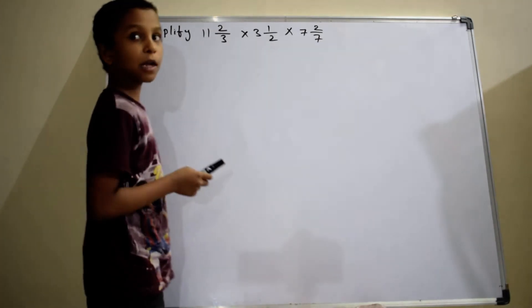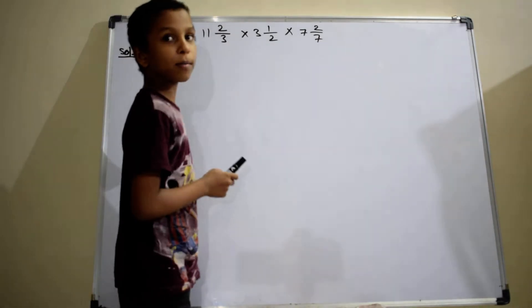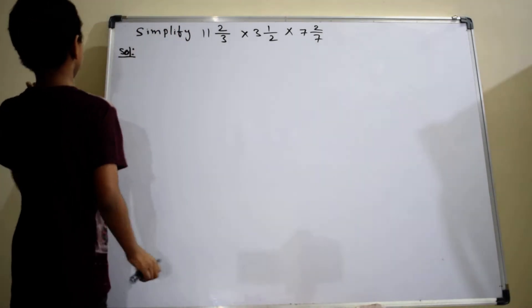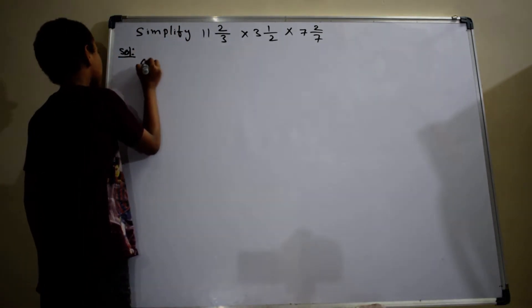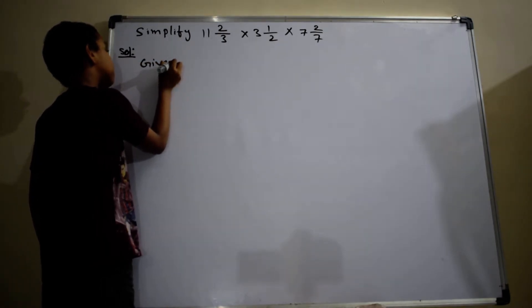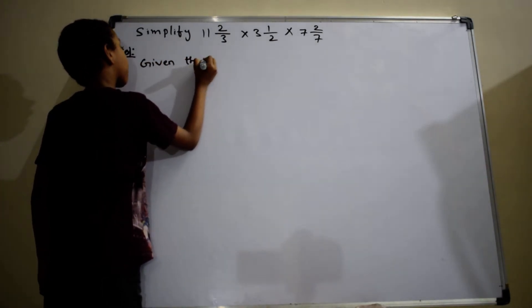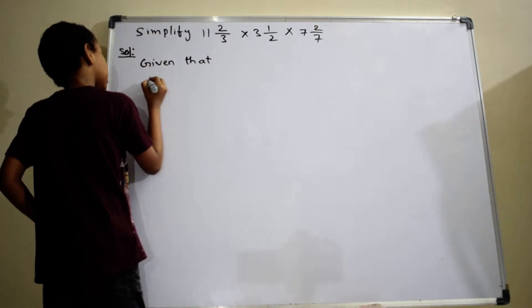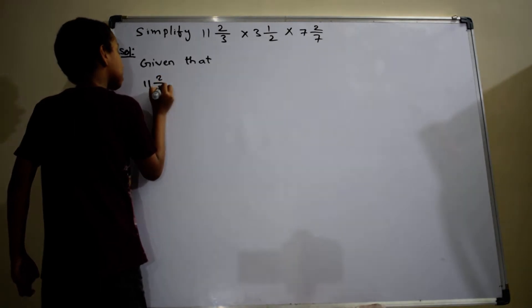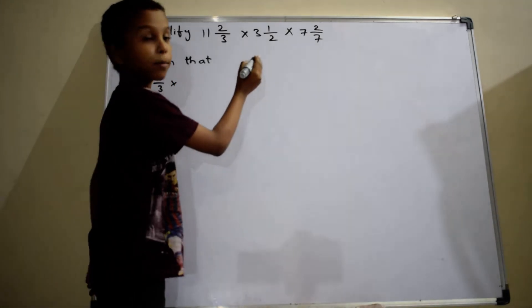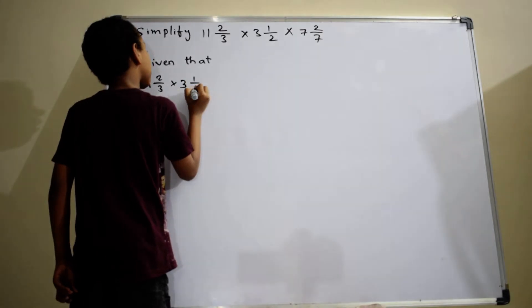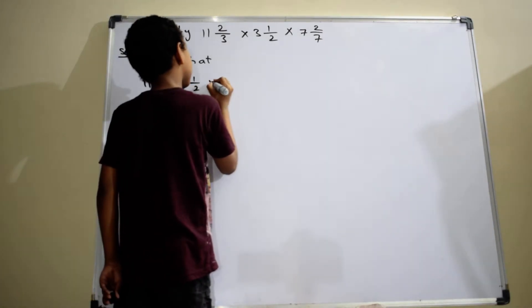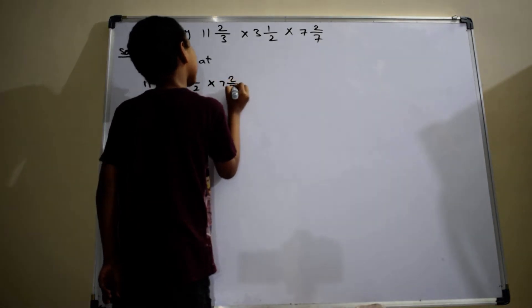The problem is, simplify 11 2/3 × 3 1/2 × 7 2/7. Given that 11 2/3 × 3 1/2 × 7 2/7.